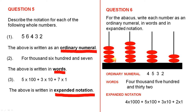Here we have four red markers, so that's four in the thousands column. Here we have five, so that's five in the hundreds column. Three in the tens column, and two in the ones column. So the ordinary numeral is 4532. In words, we write four thousand five hundred and thirty-two. And in expanded notation: 4 times 1000, plus 5 times 100, plus 3 times 10, plus 2 times 1.